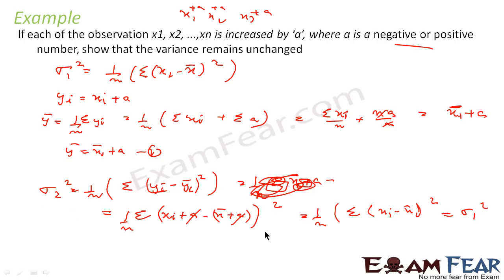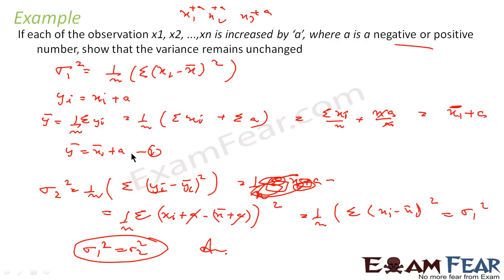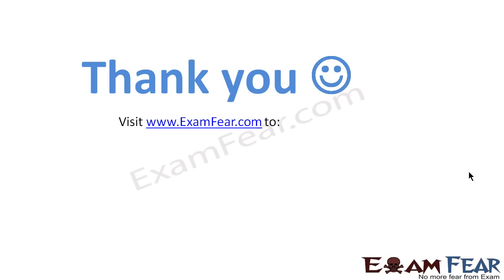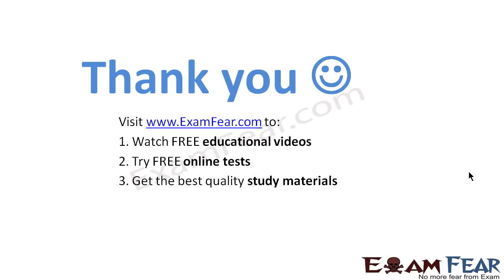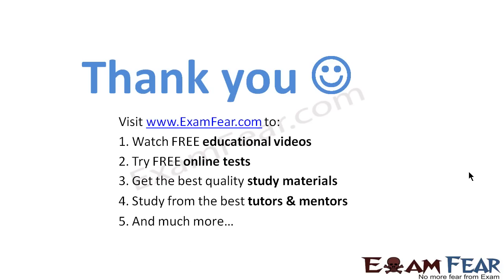We have proved that variance remains unchanged when a constant is added to each observation. We assumed yᵢ = xᵢ + a, found ȳ = x̄ + a, and showed both variance expressions are identical since a cancels out. Thank you — visit examfear.com to watch free educational videos, try free online tests, get the best quality study materials, and study from the best tutors and mentors. Thanks once again.